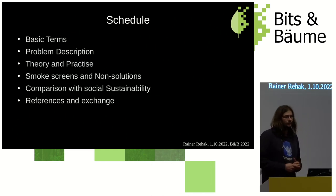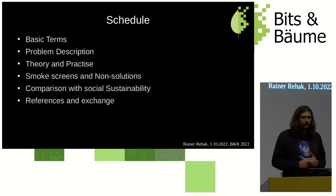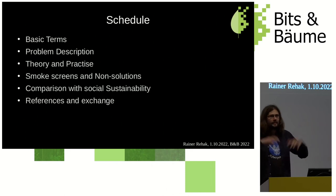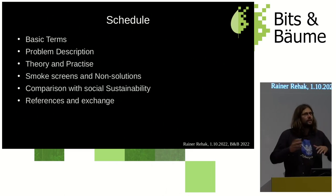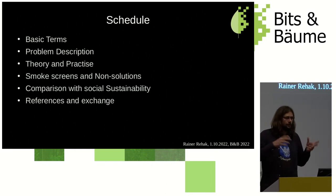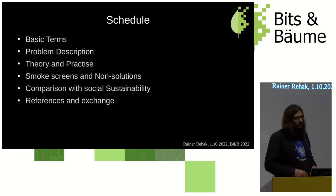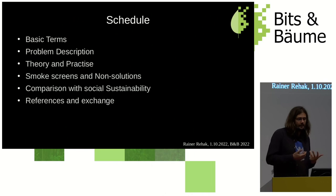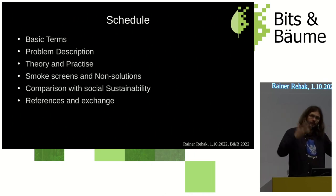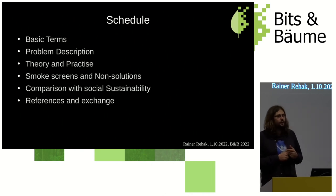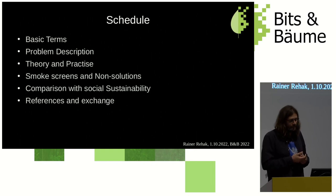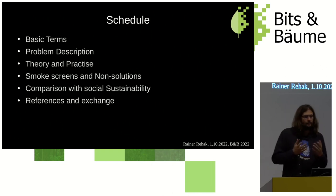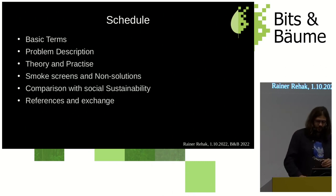So what are we going to talk about and why? First, I want to talk about some basic terms, because when we talk about data protection, a lot of things come together and people understand different things — which is okay, but we should be aware of the differences to have a fruitful discussion, especially when we merge it with the concept of social sustainability. Then I'll cover a problem description, some examples about data protection theory, some smoke screens and non-solutions, a comparison with social sustainability, references, and discussion.